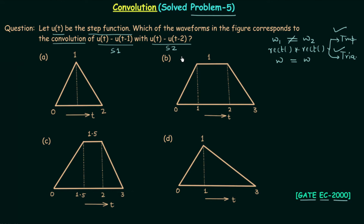The question is very easy — using the trick we can easily obtain the answer. But there is one important thing: there are two trapezoids and two triangles. We can determine if the waveform is trapezoidal or triangular, but we also need to differentiate between the two trapezoids and the two triangles using the extension of the trick. So without wasting any time, let's dive into the solution.